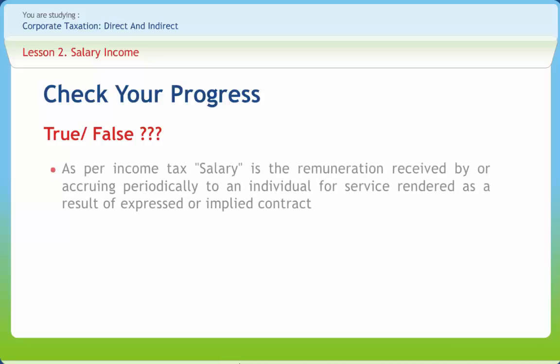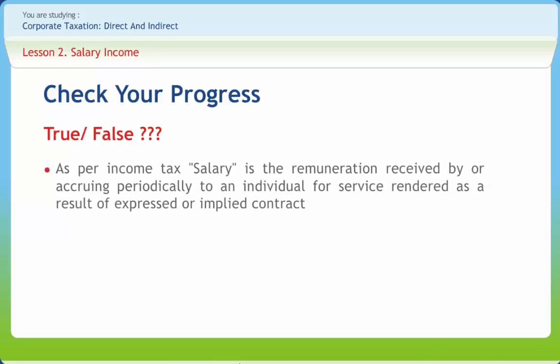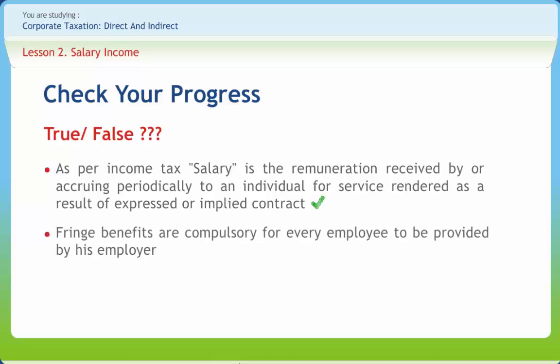Let us check if we have understood the concepts discussed in this lesson. As per income tax, salary is the remuneration received by or accruing periodically to an individual for service rendered as a result of an expressed or implied contract — correct. Fringe benefits are compulsory for every employee to be provided by his employer — incorrect.